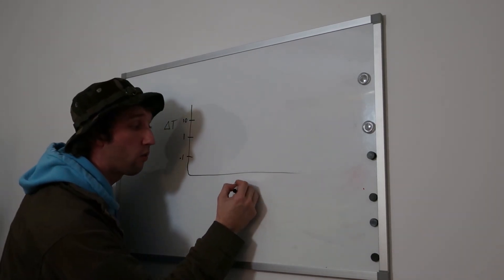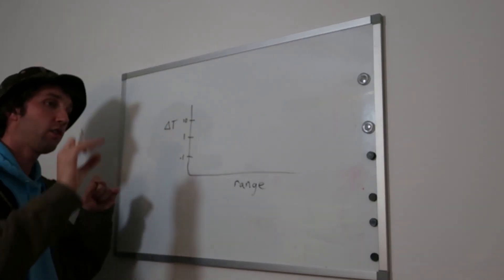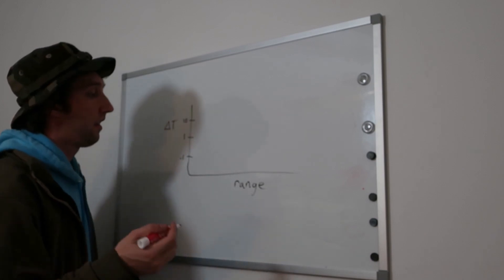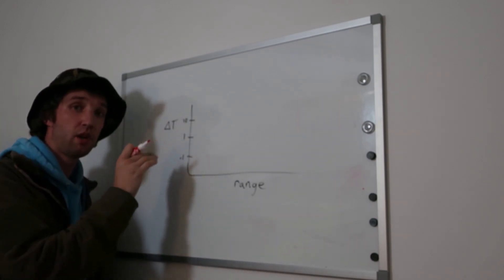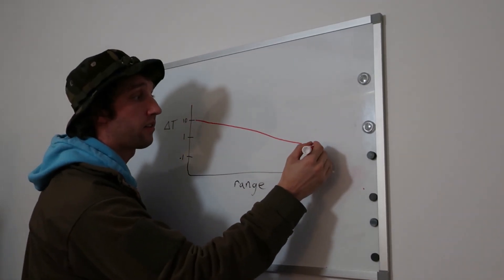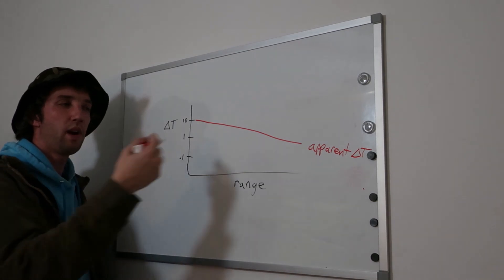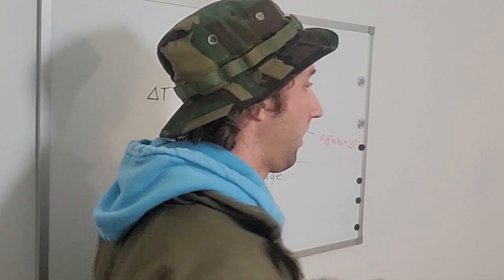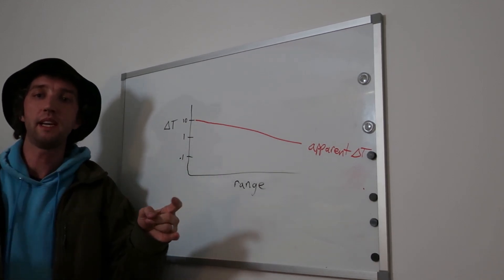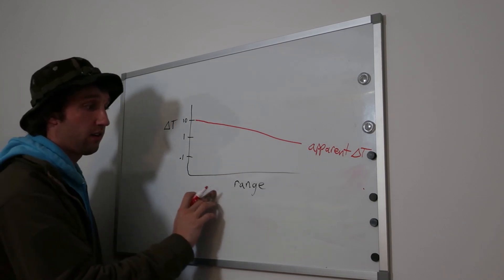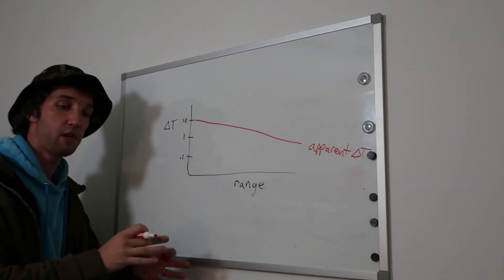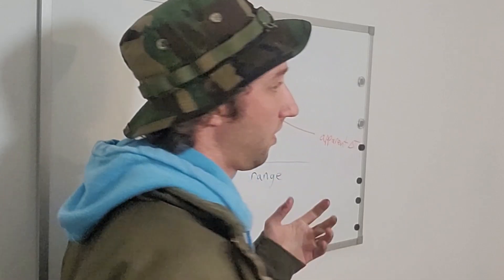And this axis will be our range from the observer, from the sensor, to the target. Now, as you increase that range, the apparent difference in temperature will go down, and that's linear on this log scale. This is the apparent delta T. The atmosphere has an effect on those infrared light waves because it's constantly being absorbed and re-emitted and scattered by the atmosphere. So that's why, as you're increasing in range, it is decreasing that apparent temperature difference between the object and its surroundings, making it more difficult for a sensor to detect.